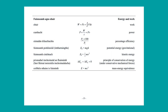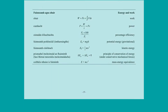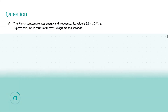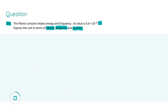Before moving on to part three, I want to draw your attention to page 55 of the formula tables book where we'll look at the mass-energy equivalence formula E = mc². For part three we are told that the Planck constant relates energy and frequency, and its value is 6.6 × 10⁻³⁴ joule-seconds. We need to express this unit in terms of metres, kilograms and seconds, so I'll use E = mc² to do that.